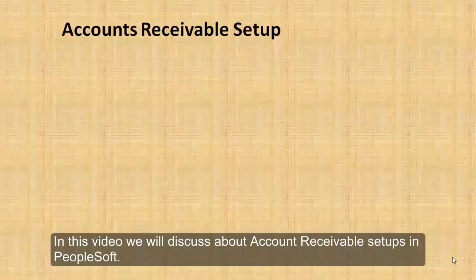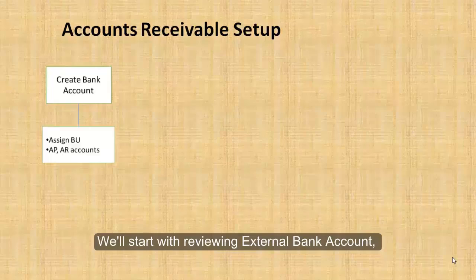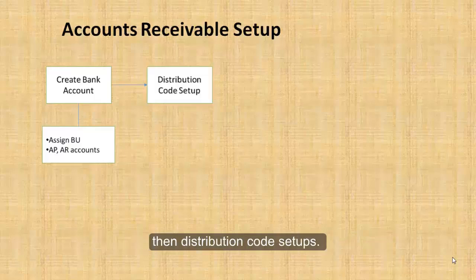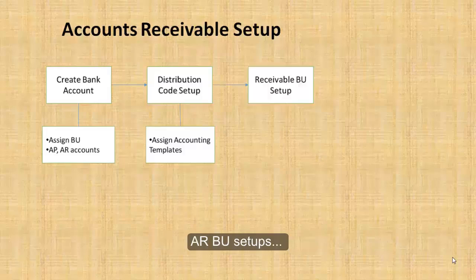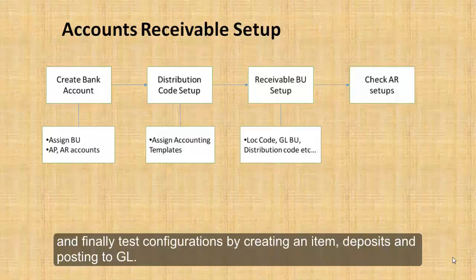In this video we will discuss account receivable setups. First, we create a bank account where we assign BU AP AR accounts. Then we'll move to distribution code setups where accounting templates need to be assigned. Then we'll move to receivable BU setups where location code, GL BU, and distribution code are assigned.